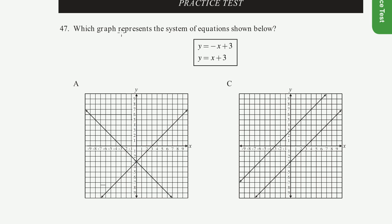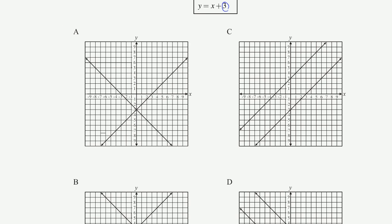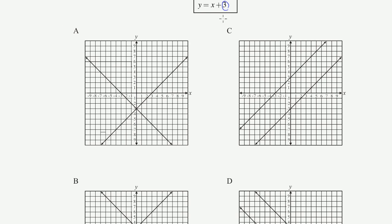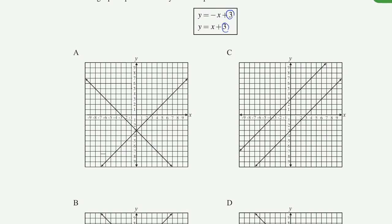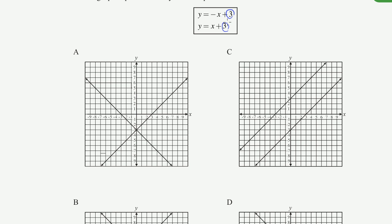Problem 47: which graph represents the system of equations shown below? Each of these equations represents a line. Both of them have y-intercepts of plus 3. This line has a slope of minus 1. We need a downward sloping line that intersects at positive 3. They're both going to intersect at positive 3.